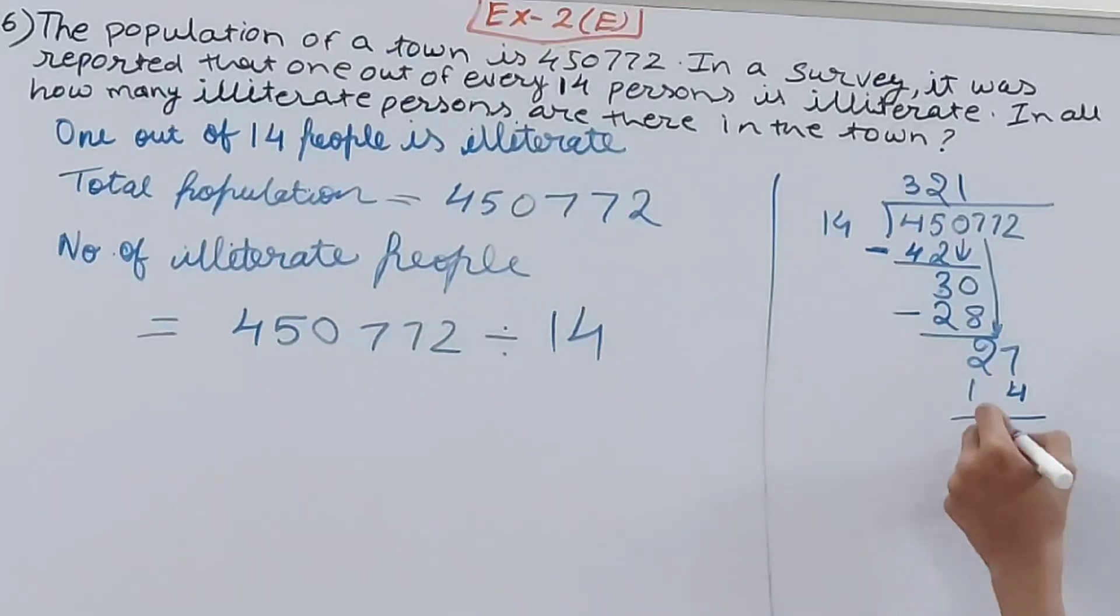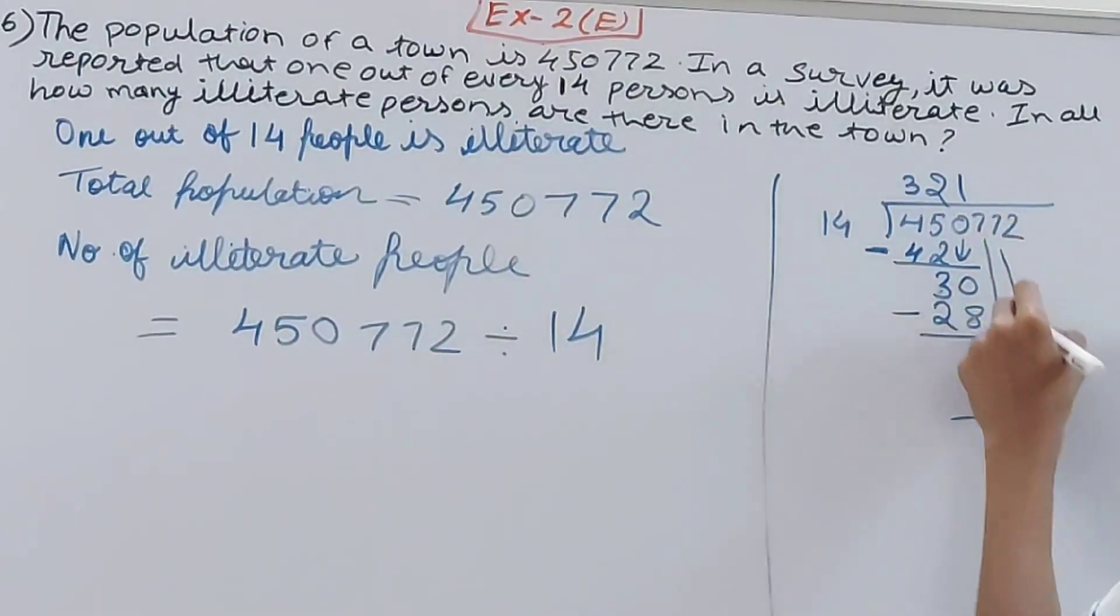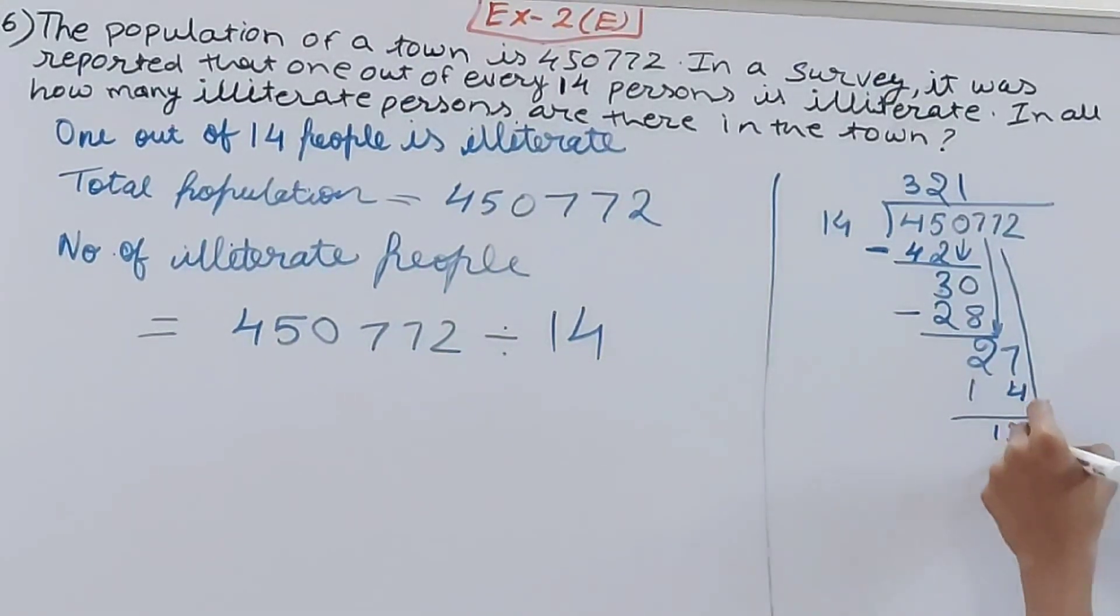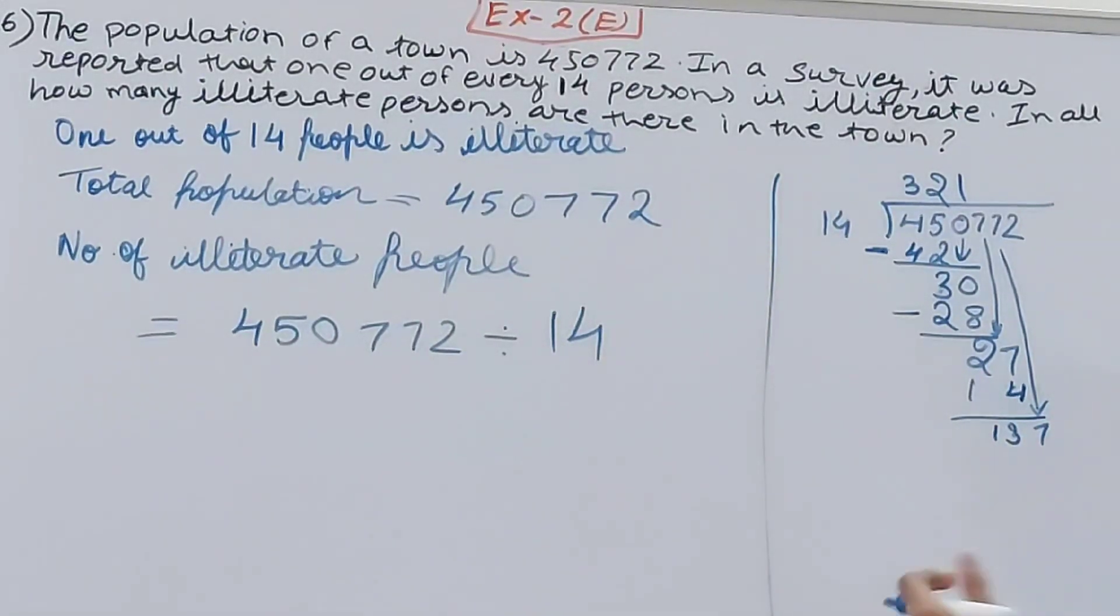We all know 14 times 10 is 140. We want 137, so it is just less than 140, so we will go nine times. That means minus 126. Now bring down this last one: 112.